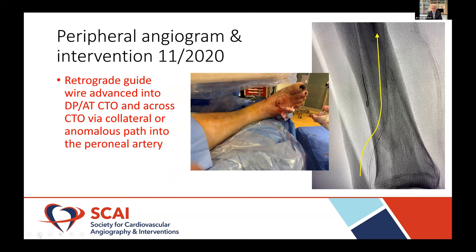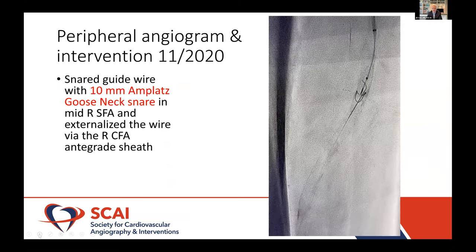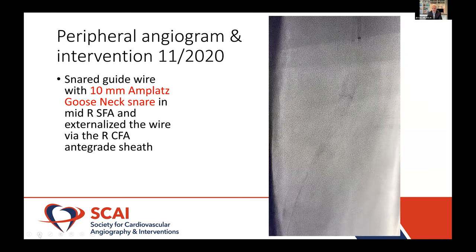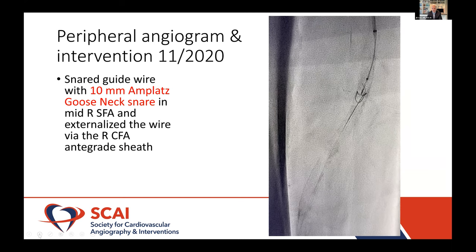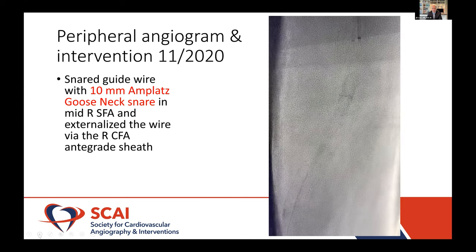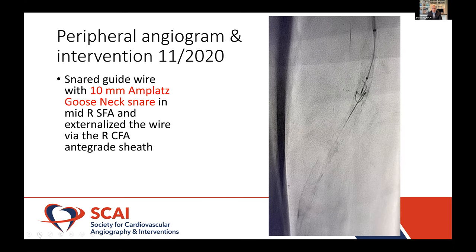Here you can see the track of the wire. Instead of going up and meeting that anterograde wire in the anterior tibial artery, it diverted over — it looks like it goes up the peroneal artery, up into the popliteal and free up into the SFA. This looks like either a collateral or an anomalous path up into that peroneal artery. Here's a quick video of us snaring that wire from the femoral sheath using a 10-millimeter gooseneck snare, externalizing that wire — now we have a through-and-through flossed wire situation.